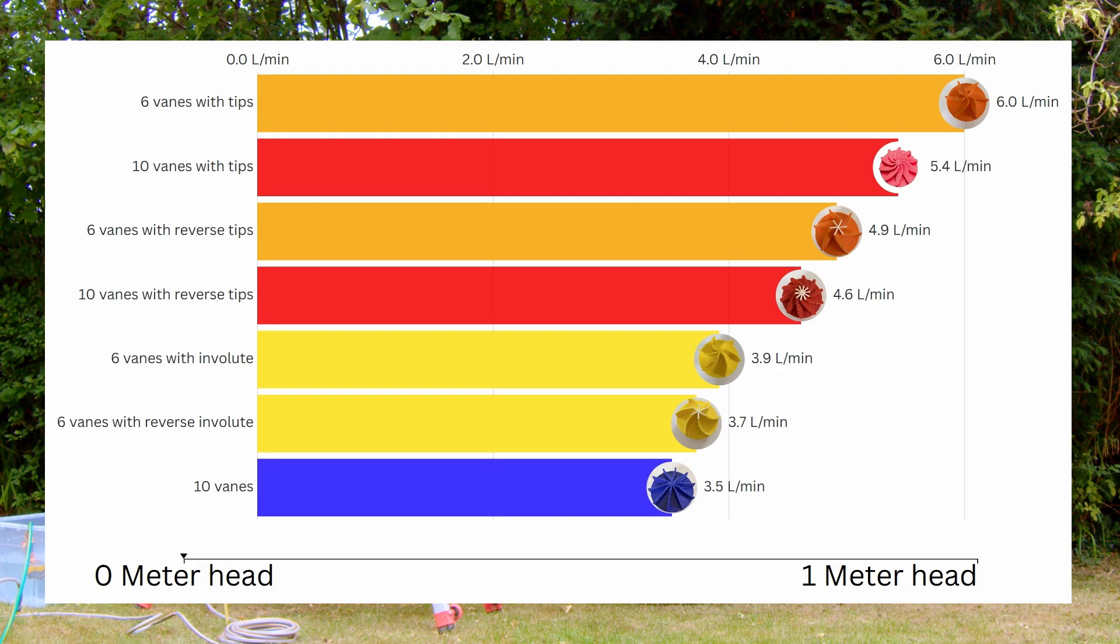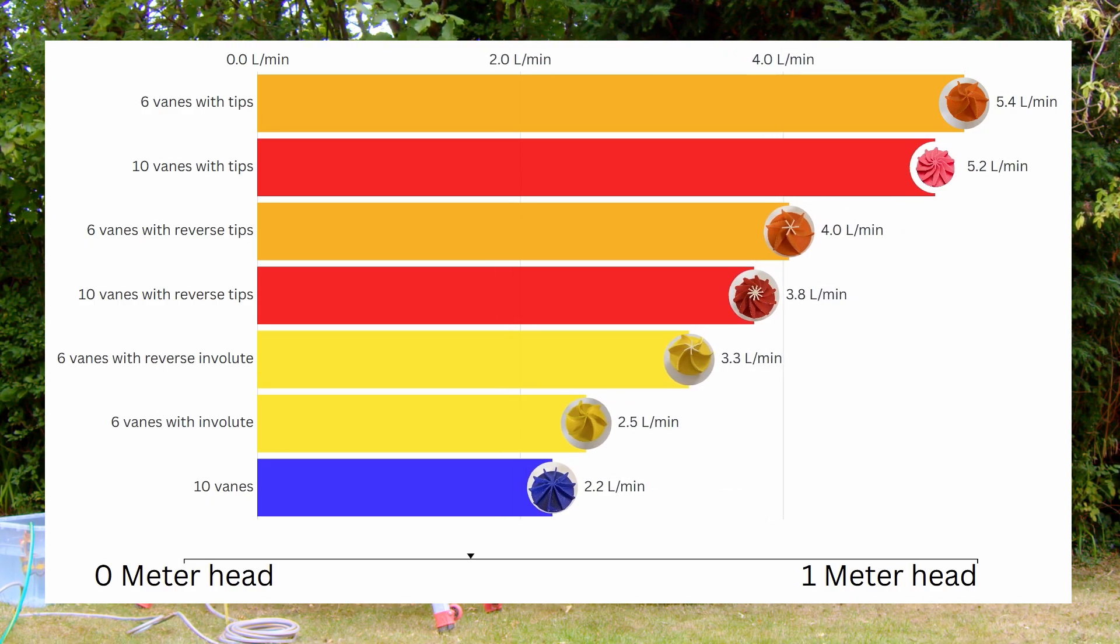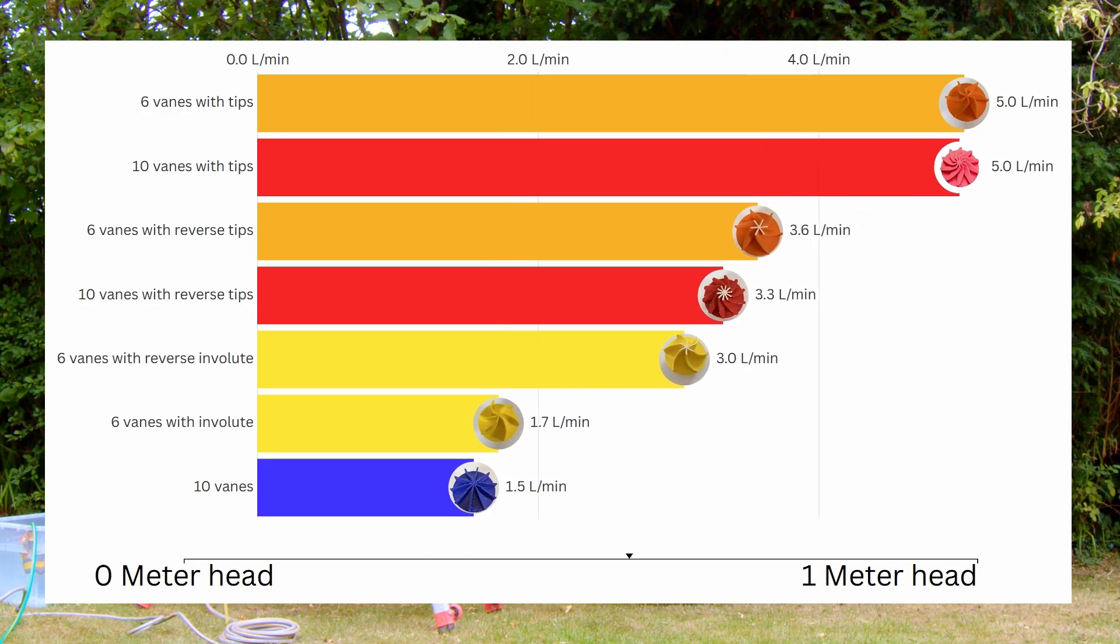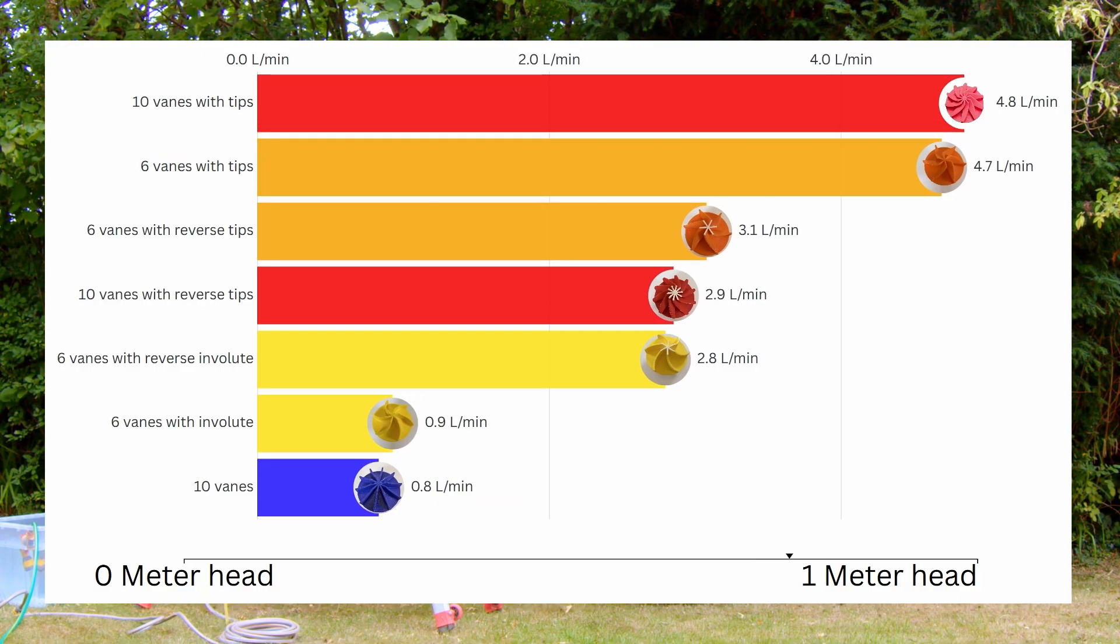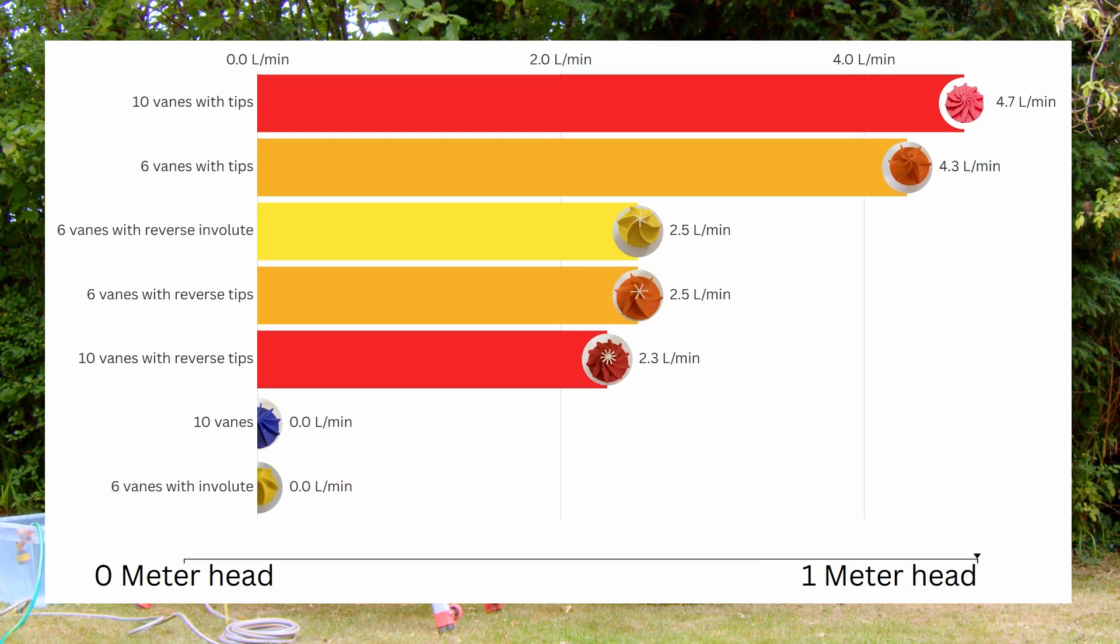Let's compare the flow rate on each of the impellers as we go from zero meters head to one meter head. So immediately you can see that the six veins with the reverse involute climbs up the rankings. Secondly, you can see at the top of the table, the order between the orange and the red impellers switches, meaning that adding more veins can increase the pressure inside of the pump.